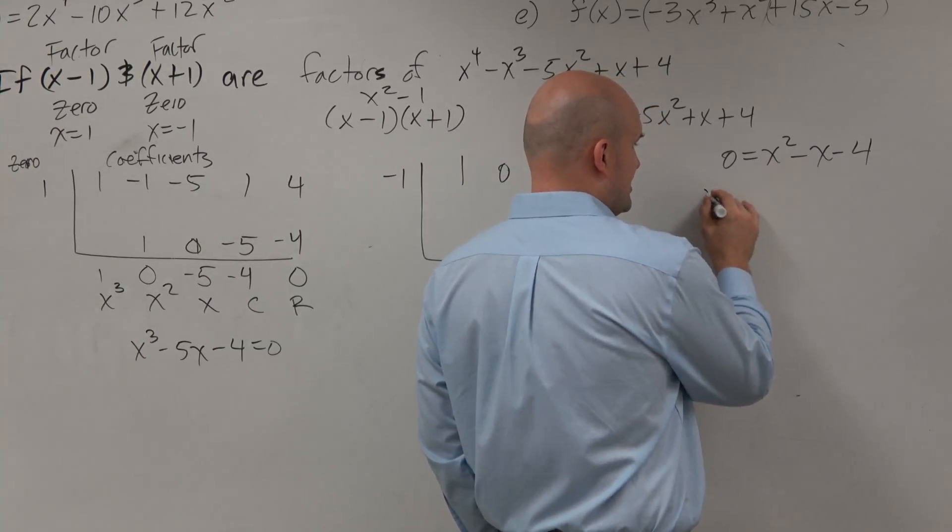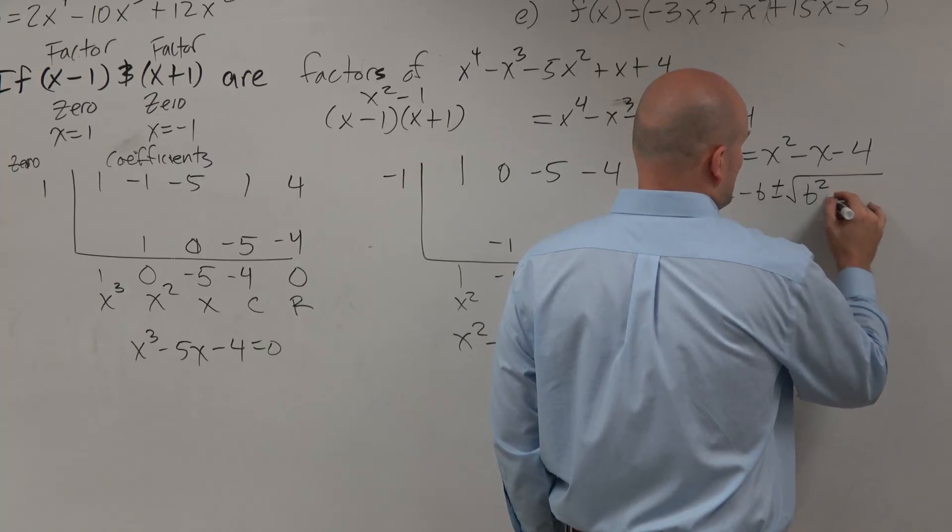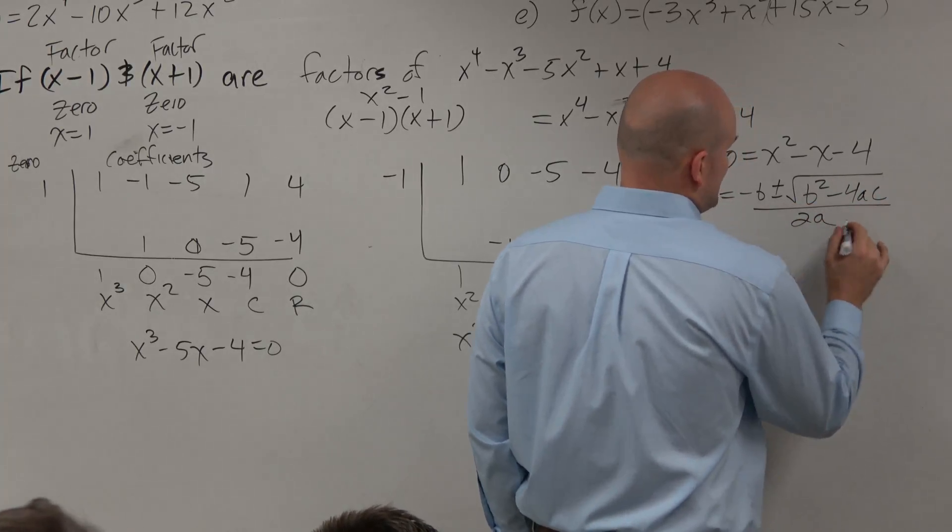Remember, the solutions here is x equals opposite of b plus or minus square root b squared minus 4 times a times c all over 2 times a.